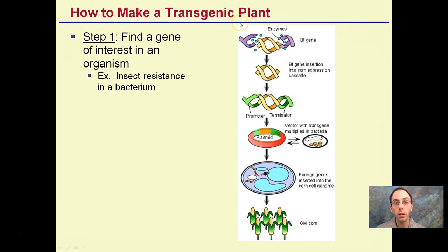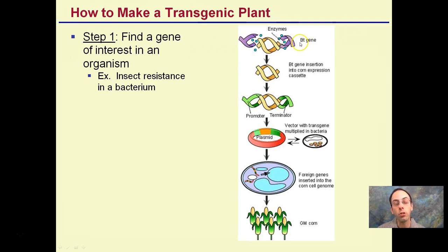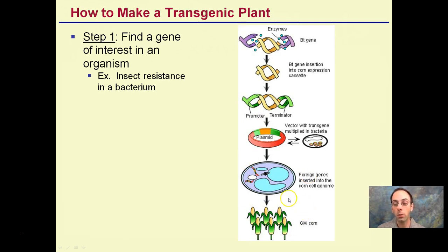So how to make a transgenic plant? Step one: find a gene of interest in an organism. An example would be an insect resistance bacterium. Here's our Bt — Bacillus thuringiensis — which is a very common one. It's a gene inserted into corn for expression. Here's our promoter region, here's our plasmid. We're putting those foreign genes into the corn cell genome and we grow GM corn, genetically modified corn.